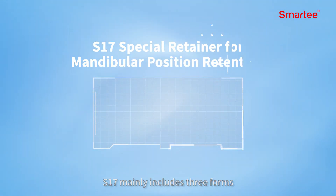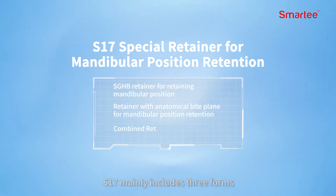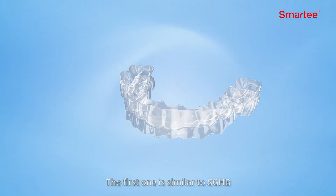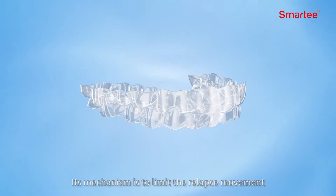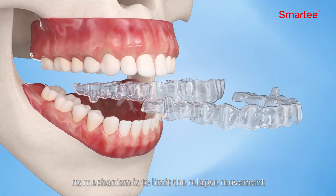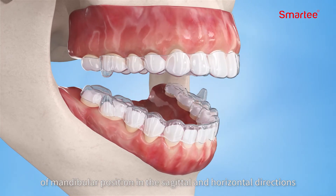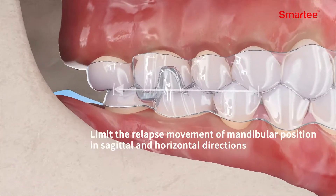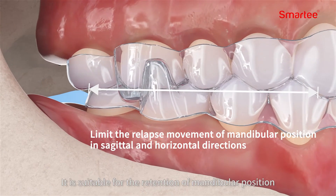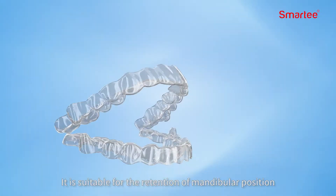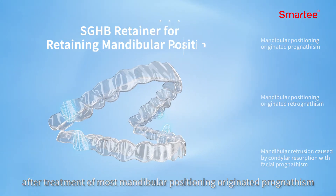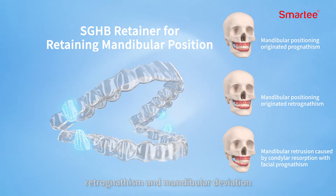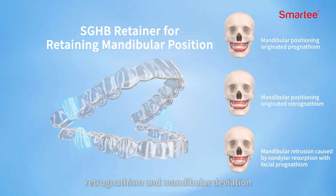S17 mainly includes three forms. The first is similar to SGHB. Its mechanism is to limit the relapse movement of mandibular position in the sagittal and horizontal directions. It is suitable for the retention of mandibular position after treatment of most mandibular positioning originated prognathism, retrognathism, and mandibular deviation.